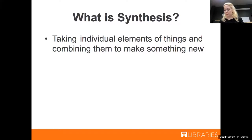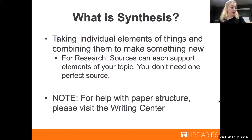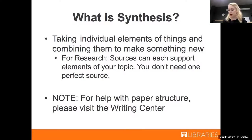For the search process, this means you're searching for several sources that each address a piece of your research question, and you use them in tandem to support your overarching argument. You aren't necessarily looking for one perfect source, but are instead willing to find several sources that support different elements of your argument. Note that this workshop is about how synthesis can be used to better your search process, but people also often use synthesis to structure their arguments. If you want more information on paper structure, please contact the Writing Center — they're a great resource.